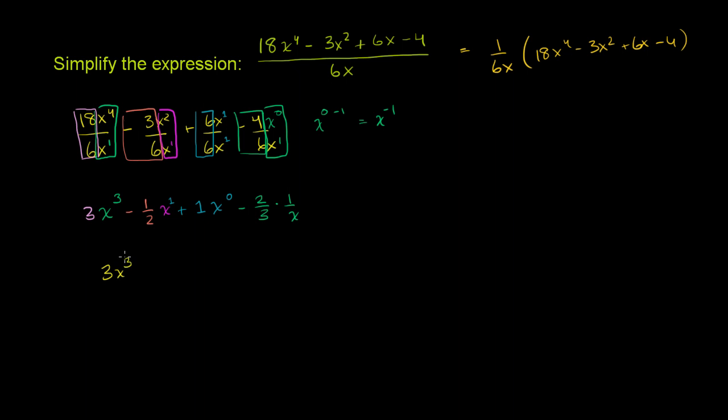And so let's just write our answer completely simplified. It's going to be 3x to the third minus 1 half x plus 1, because this thing right here is just 1, so plus 1 and then minus 2 times 1 in the numerator over 3 times x in the denominator. And we are done. Or we could write this last term as minus 2 thirds x to the negative 1, but if you don't want a negative exponent, you could write it like that.